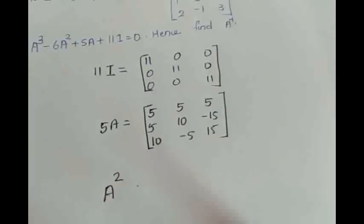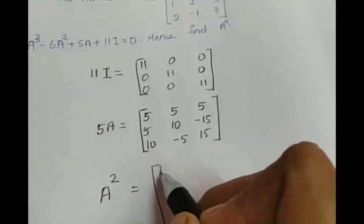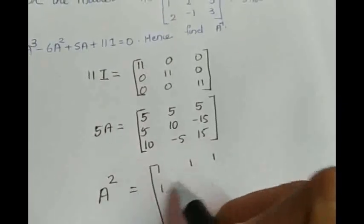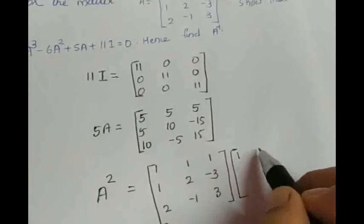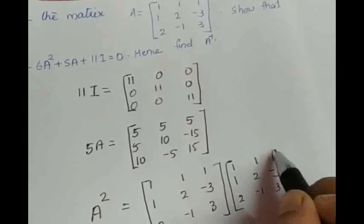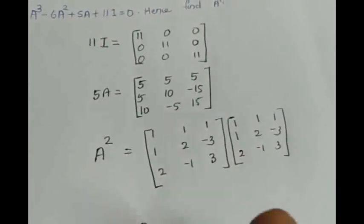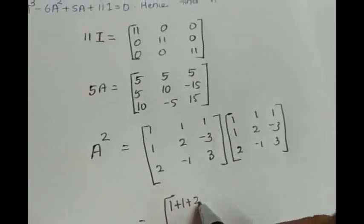Then, we require A square equal to A into A. That means 1, 1, 1, 1, 2, minus 3, 2, minus 1, 3 into again 1, 1, 1, 1, 2, minus 3, 2, minus 1, 3. Multiplying it: A square first row — 1 plus 1 plus 2, 1 plus 2 minus 1, 1 minus 3 plus 3. That completes the first row.